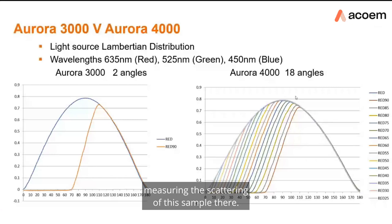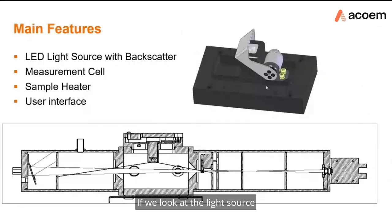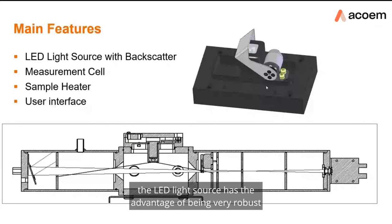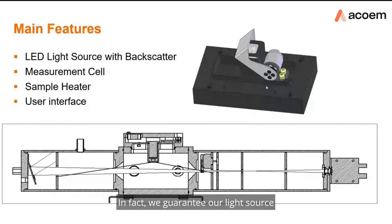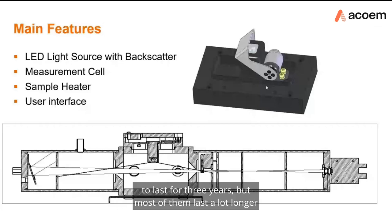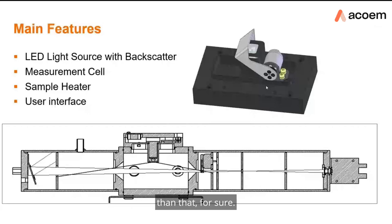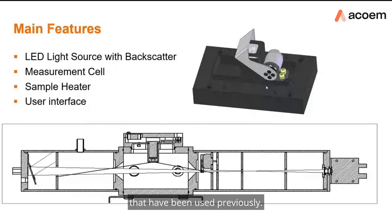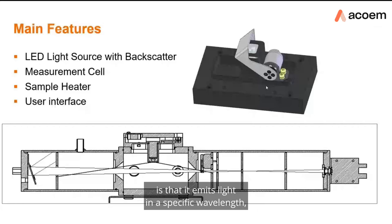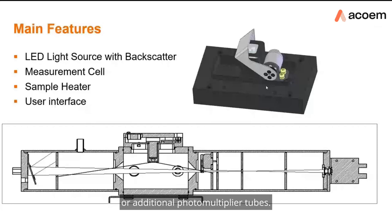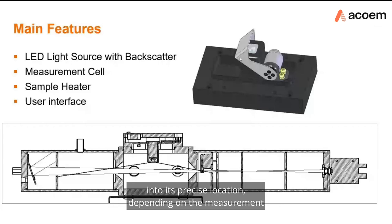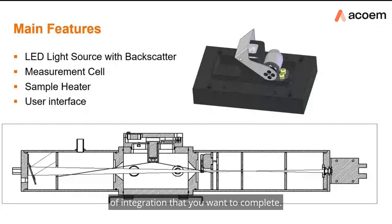The LED light source has the advantage of being very robust and providing high reliability — we guarantee the light source to last three years, though most last considerably longer. Heat generated by the LED is a fraction of what flash lamps previously produced. Because LEDs emit light at a specific wavelength, there is no need for additional filters or extra photomultiplier tubes. A servo motor precisely moves the backscatter arm to its precise location depending on the desired integration measurement.